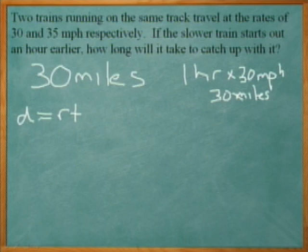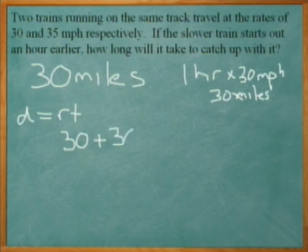So the distance of this first train is going to be already 30 miles ahead. So we put that 30. And then from now on, it's going to go 30 miles per hour. And we say x is the number of hours after that first hour.